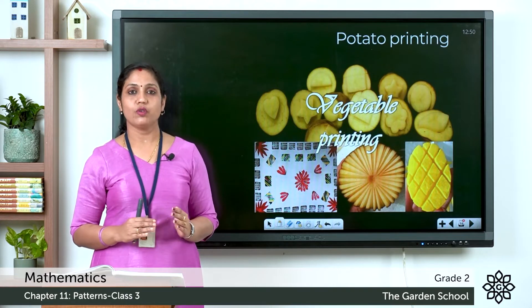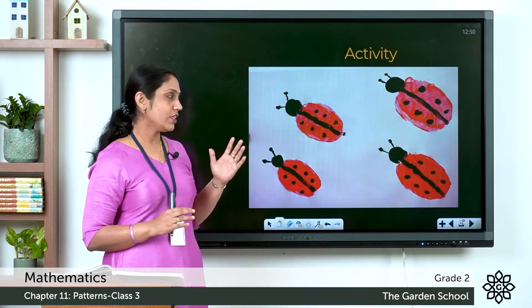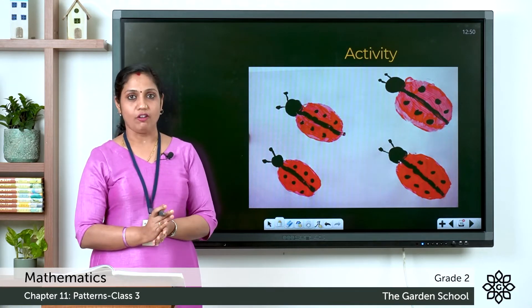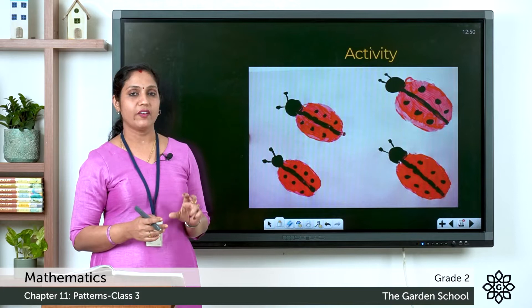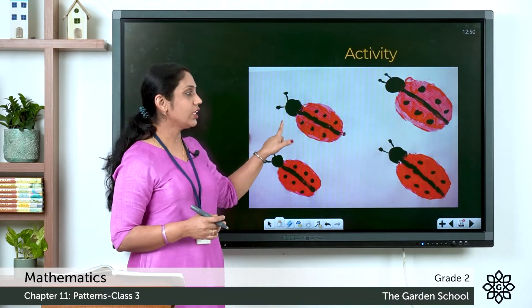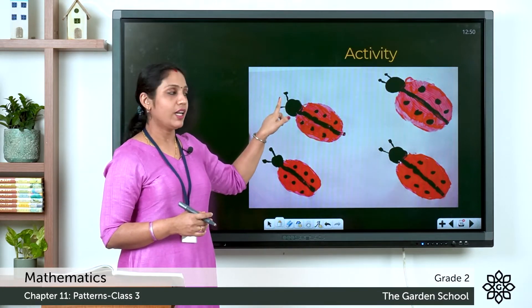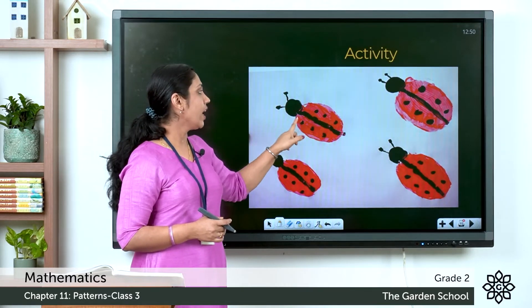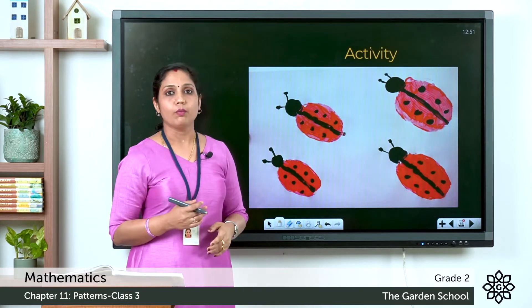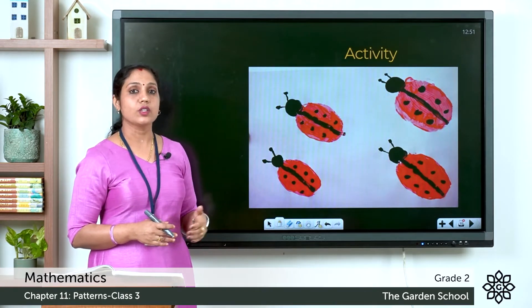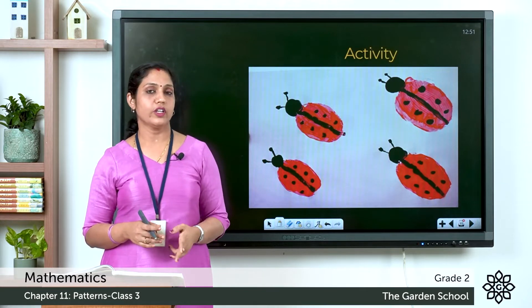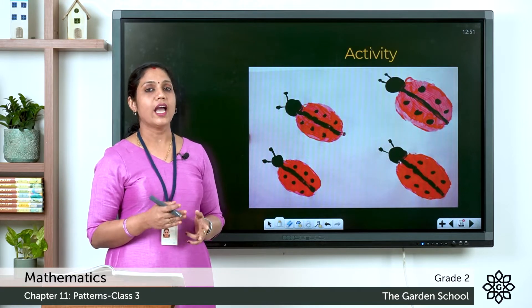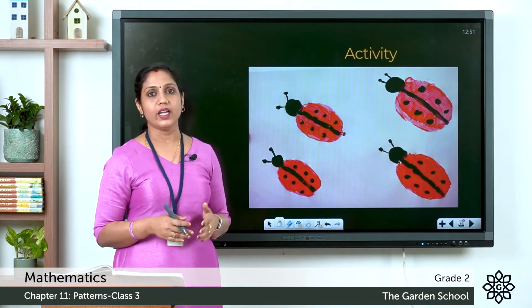Next, we can use potatoes for printing patterns. To make a ladybug, cut the potato in half, press it in red paint, and stamp it on paper to get the body. Let it dry, then draw the head, a line, and dots to complete the ladybug. These are activities for you to do.